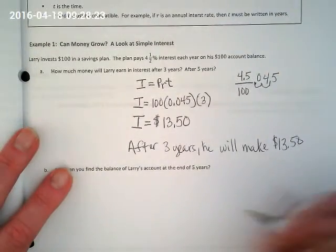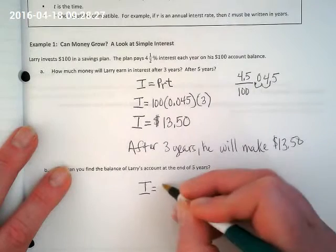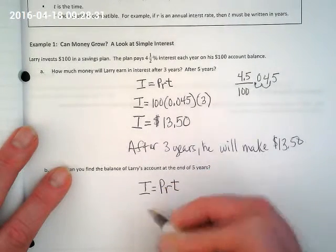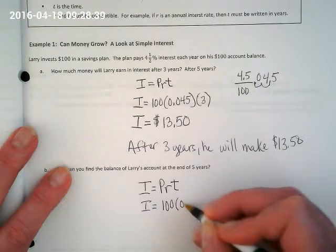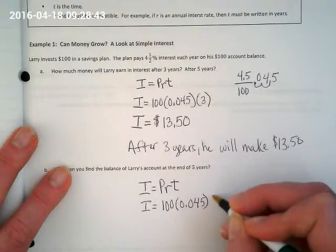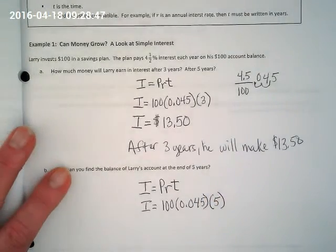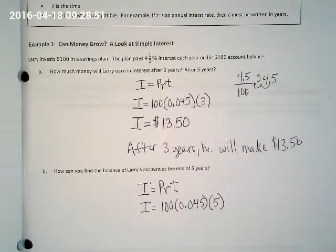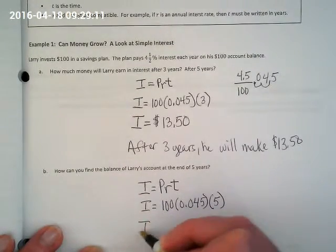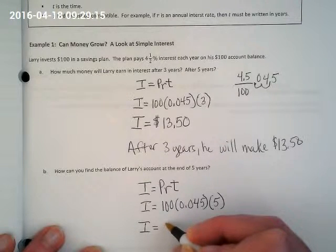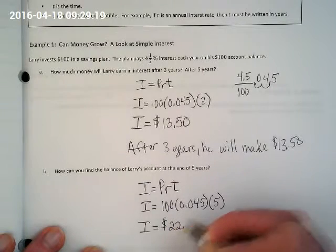Can we do the same for five years? Let's set this up again. Interest still equals the principal times the rate times the time. He originally put in $100, he has the same interest rate over all five years, only this time our number for the years is 5. Go ahead and calculate that. After five years instead of three years, he gets $22.50.